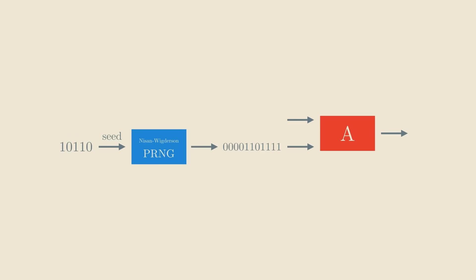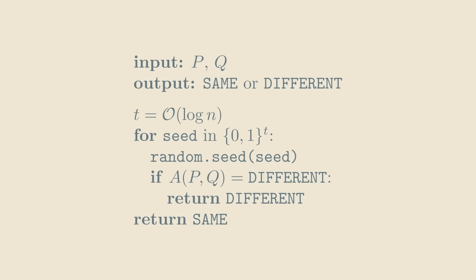Notice that even if we run A with pseudorandom bits, the algorithm is still randomized, because we need to seed the pseudorandom generator. But remember that the seed is very short. In the case of the Nisan-Wigderson generator, the seed only has O(log n) bits. This means that we can now create a new algorithm that literally iterates over all possible seeds, and for each seed runs A with pseudorandom bits generated from that seed.